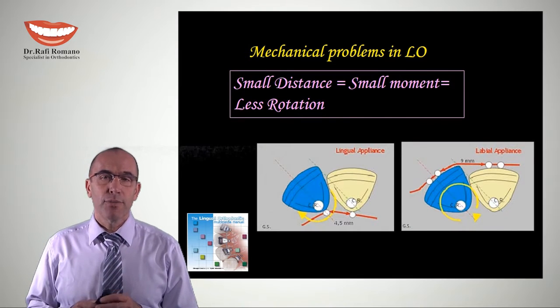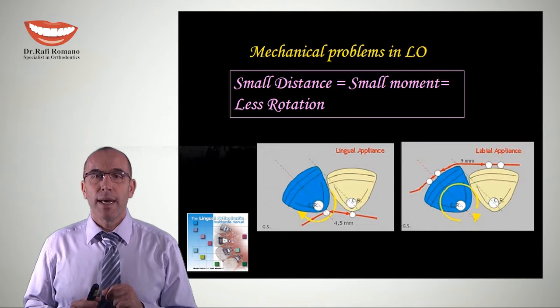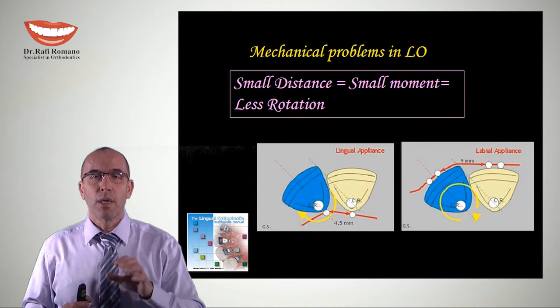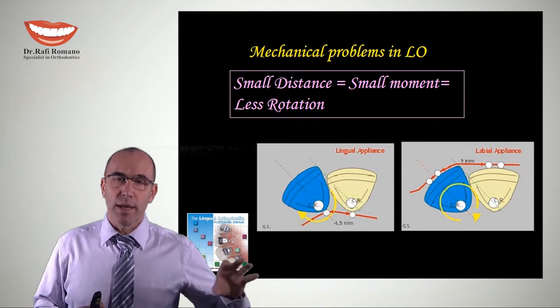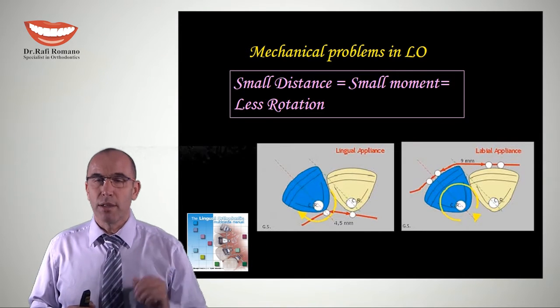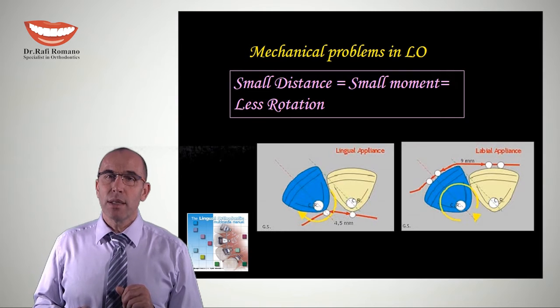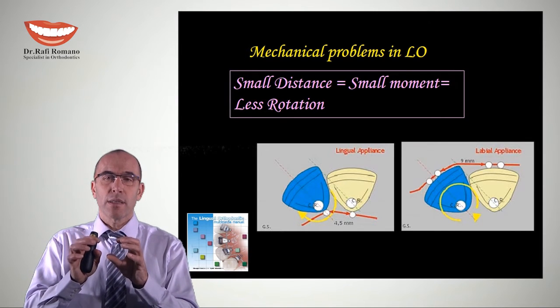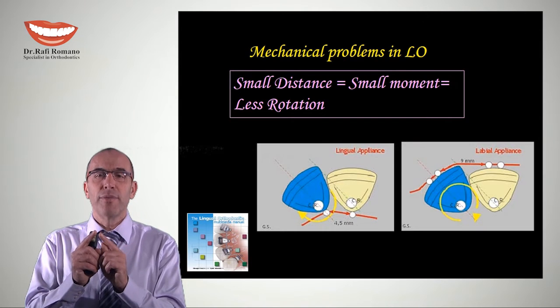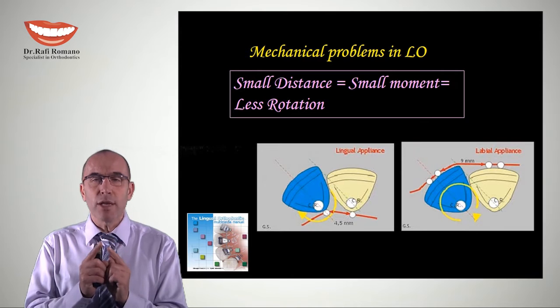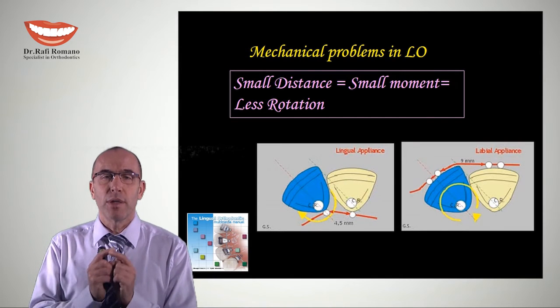As you can see here, for example in rotations - this illustration was taken from a CD-ROM by my friends Kuzo and Takamoto, marketed by OMCO many years ago - two lingual brackets have a very minimal distance between them, which makes rotation very difficult.